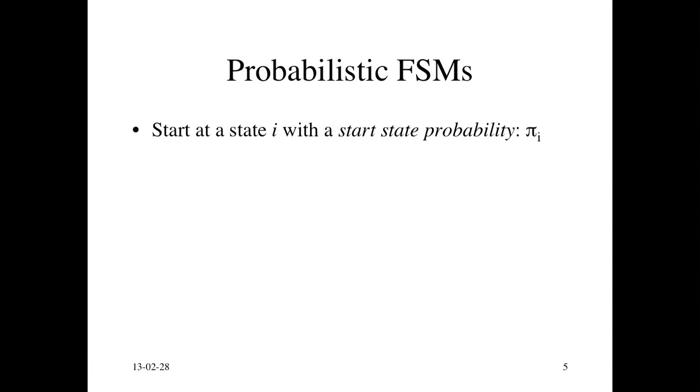Here we give a probability. Instead of saying you have to start at state number one, we say you could start with a certain probability at any state. That's called pi, and the subscript i refers to the state.